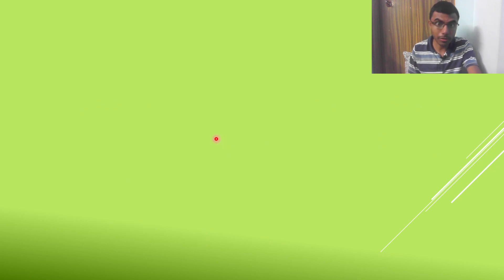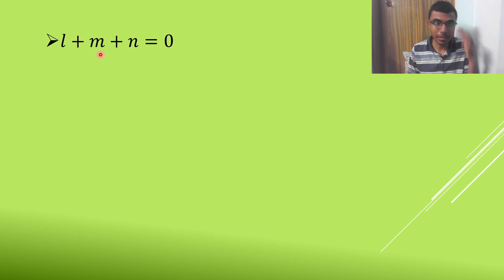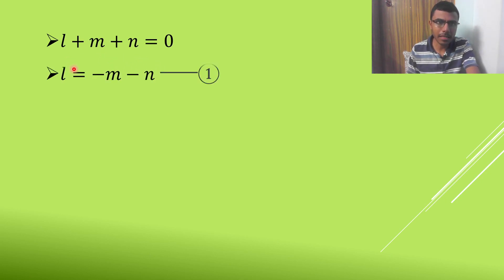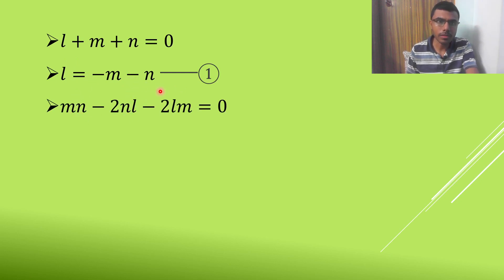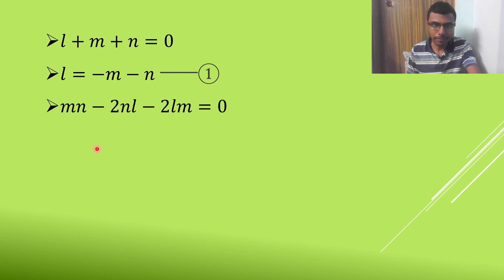Stay with me. I am going to go a bit fast, so stay alert and attentive. This is my first equation: L plus M plus N equal to 0. Next, write L as minus M minus N and substitute it in the second equation. This is my second equation — just substitute it.